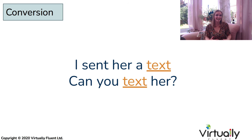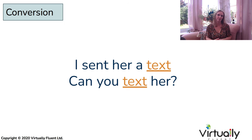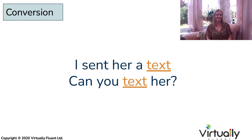But take a look at the second sentence: 'Can you text her?' Now it's being used as a verb instead. We know this because we have a modal verb, which requires an infinitive afterwards, a personal pronoun 'you', and an object pronoun after. So here the word 'text' is exactly the same — no spelling changes, no pronunciation changes — but the function of the word is different.